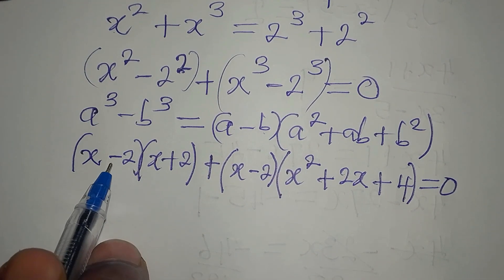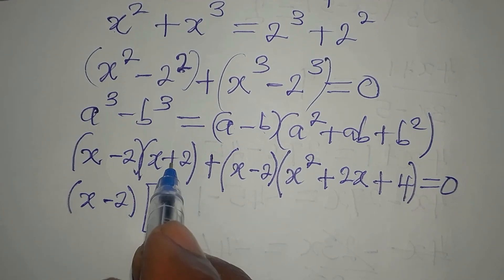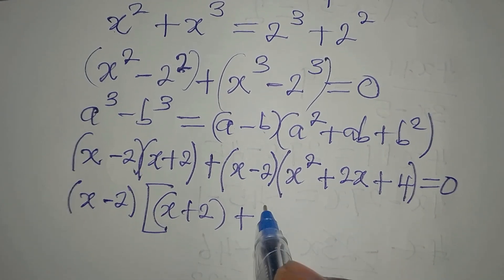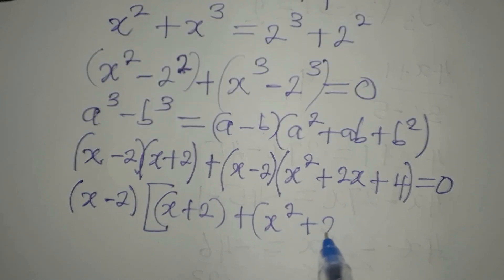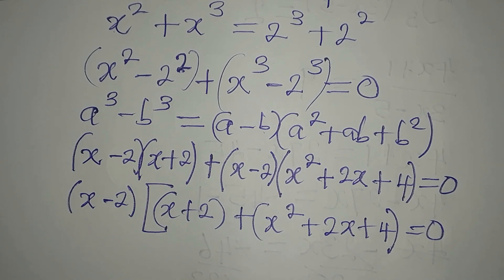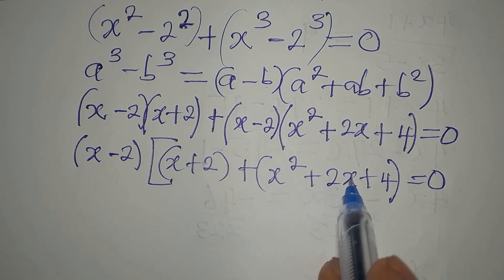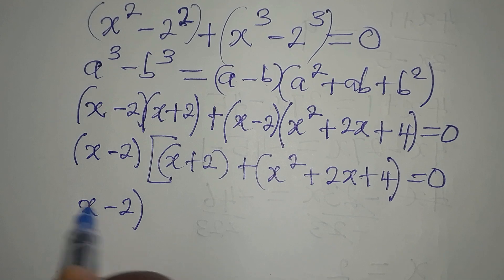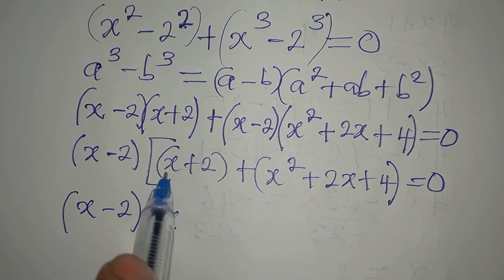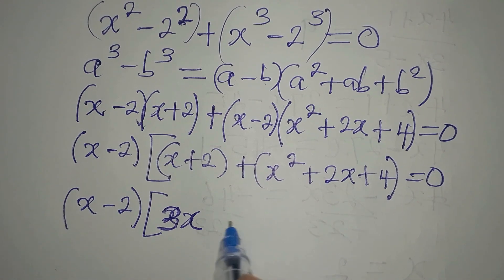Now x minus 2 appears in both groups, so it becomes a common factor. We close the bracket, giving us x minus 2 times the quantity x plus 2, plus x squared plus 2x plus 4, equals zero. Opening the bracket and combining: x minus 2 is the common factor, and x plus 2x gives us 3x.